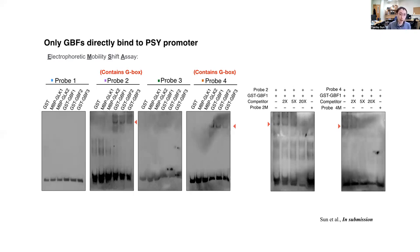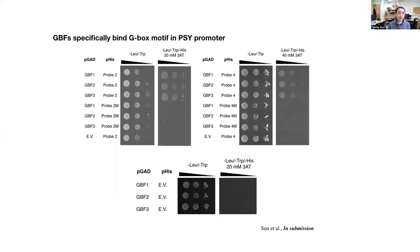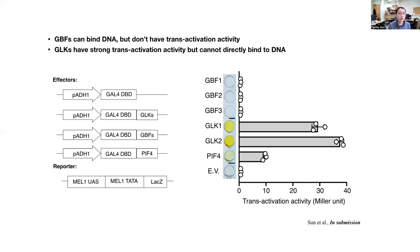This result suggests that only GBF can bind to the PSY promoter, confirmed also by our yeast one-hybrid assay. When we mutated probe 2 and probe 4, GBF cannot bind to those probes. We then performed a transactivation activity assay and found that GLK1 and GLK2 have very high transactivation activity compared to a positive control, but when we checked GBF1, 2, and 3, they don't have any transactivation activity. So our conclusion is: although GBF can bind the G-box motif in DNA, they don't have transactivation activity, whereas GLK provides strong transactivation activity.